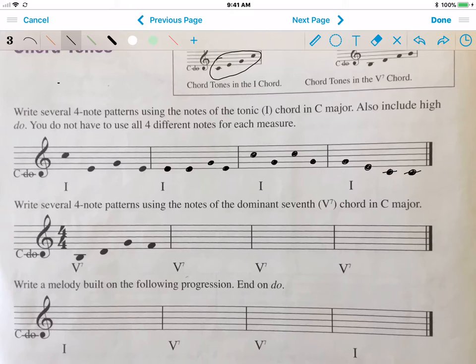Now it says write several four note patterns using the dominant seventh. That's the fancy name for the five seven chord in C major. I can use that TI. Now they're restricting you to these four. Yeah, you could use the upper TI and the RE, but I'm going to stay within what they're suggesting.